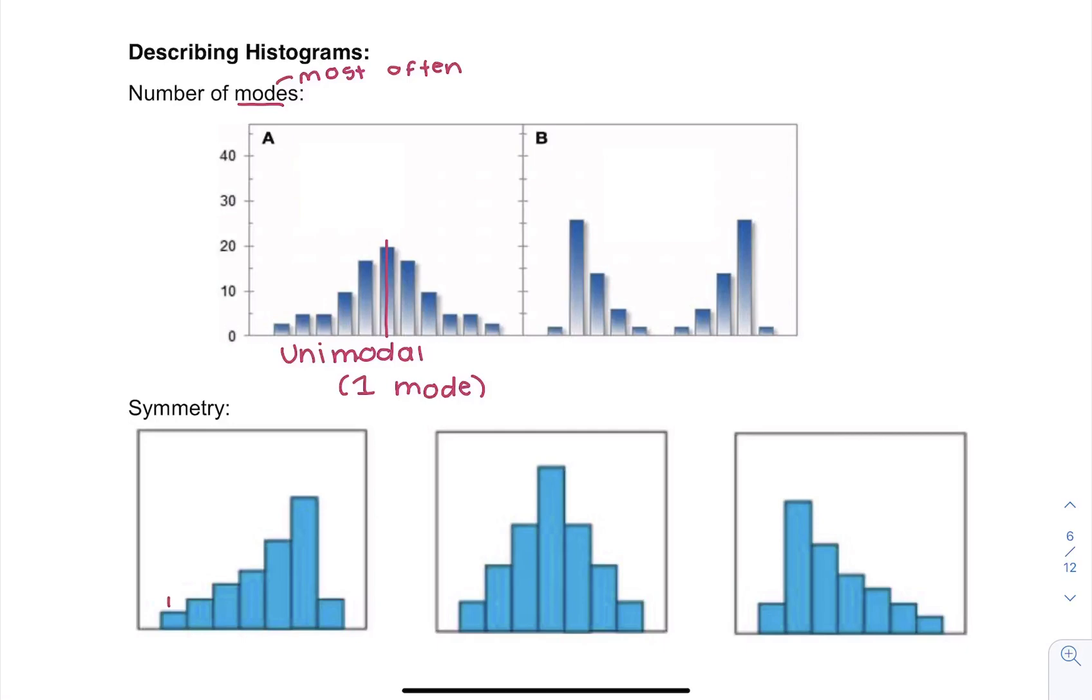Sometimes we end up with more than one. So in the second graph you kind of see we have two high points, so here this is called bimodal. So think two modes.